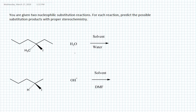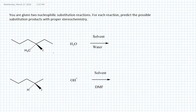In this tutorial we are going to solve a question related to nucleophilic substitution reactions. The question asks you to predict the possible substitution product with proper stereochemistry for two given nucleophilic substitution reactions. To solve this question we have to identify what type of nucleophilic substitution reaction might happen.